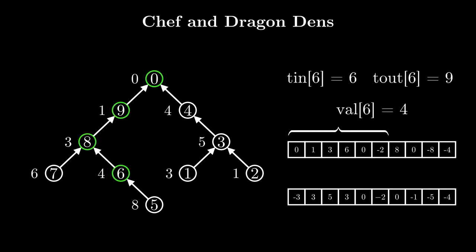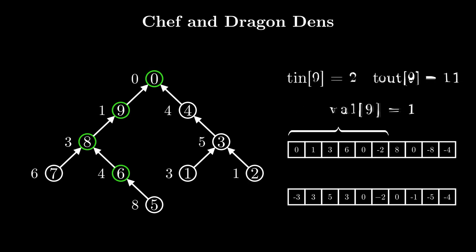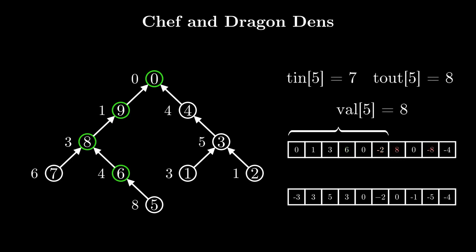Let's find the sum from the root to node 6. The sum from arr[1] to arr[t_in[6]] = arr[6] should equal the root-to-6 sum: 1 + 3 + 6 - 2 and 1 + 3 + 4 = 8. Looking at ancestor node 9, its value gets added in our range but does not get cancelled out, as that happens at index 12 which is outside our range — true for all ancestors since their t_out values are greater than t_in[6]. For node 7, a visited-and-exited node, a[7] gets added at index 4 but subtracted again at index 6, making its total contribution 0. For node 5, which isn't on our path, both t_in[5] and t_out[5] lie outside our range, so it contributes nothing.